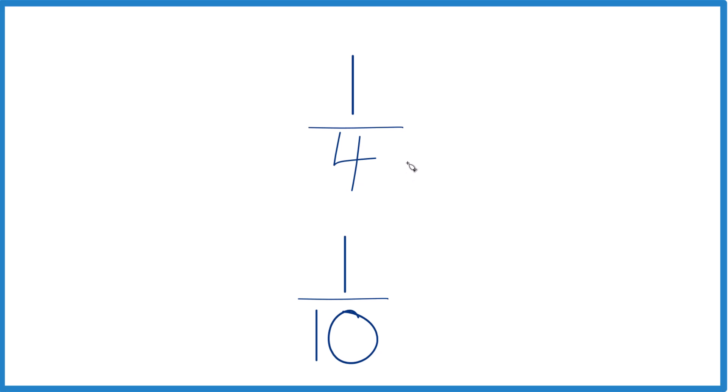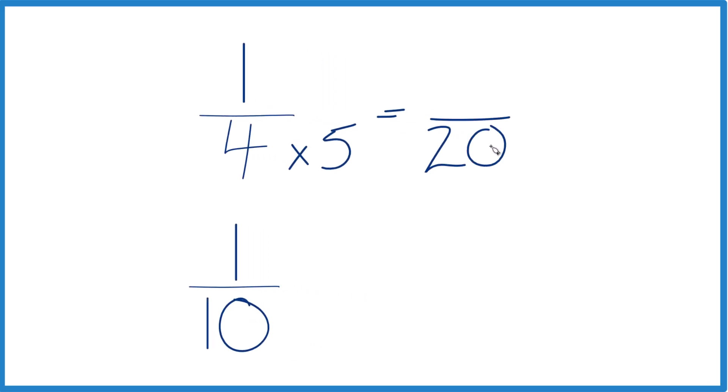The way to do this is let's multiply 4 times 5. We're going to get a common denominator because 4 times 5 is 20. And then down here, I can take 10 times 2, and that'll get me 20 as well.